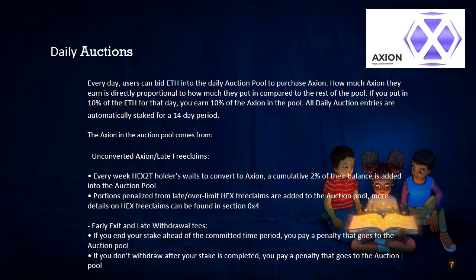The daily auction: putting tokens and value into your pocket. To get Axion, it needs to be claimed by HEX2T holders. The longer they wait to claim, the more penalties they face — about 2% of their total per week. This 2% is added into a daily auction pool where people can bid using ETH on the Axion tokens within it. If you bid 10% of the ETH on that day, you get 10% of the pool rewards. 80% of the ETH paid in the auction is then used to hyperdrive both the Axion token and the stakers' earnings.